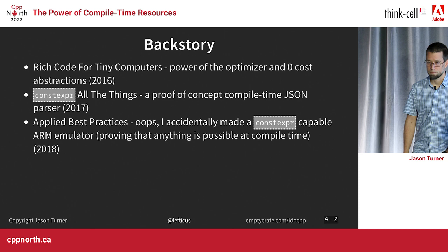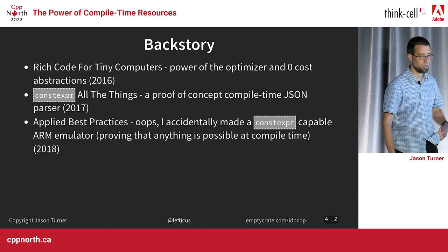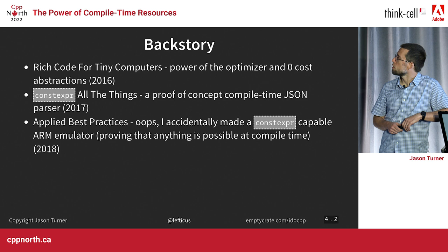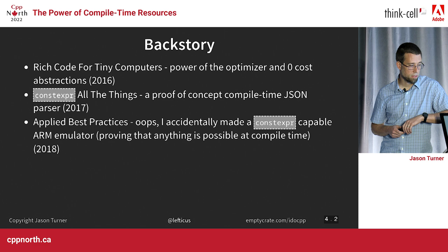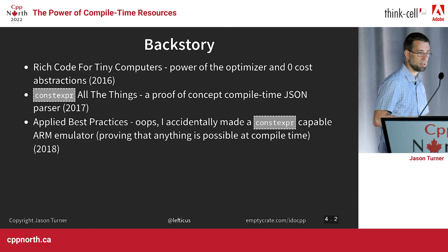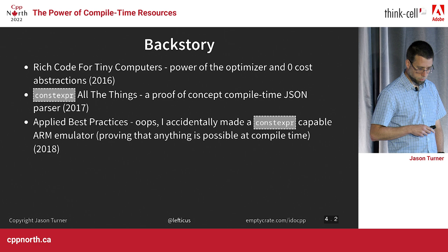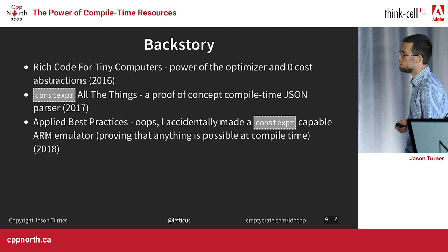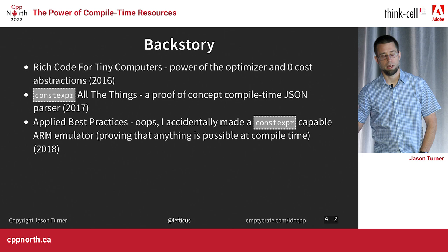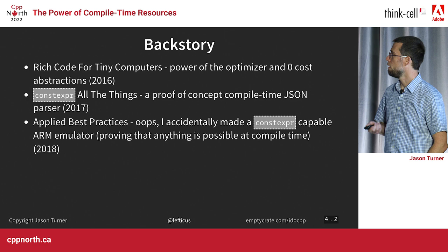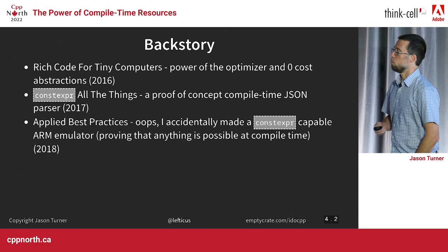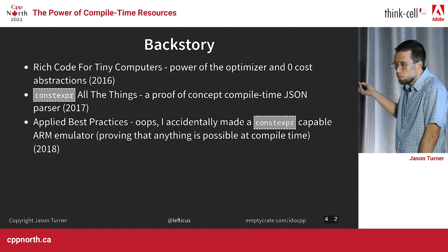Power of compile time resources — let's give a little bit of a back story. Rich Code for Tiny Computers was a talk I gave at CppCon in 2016, a look at the power of the optimizer and zero-cost abstractions. Then in 2017, Ben Dean and I did a talk called Constexpr All the Things, a proof-of-concept compile time JSON parser. Then in 2018, I did Applied Best Practices at CppCon again — I accidentally made an ARM emulator that was completely runnable at compile time with constexpr. If you can run an emulator at compile time, you can do anything at compile time.